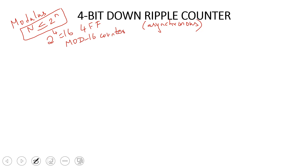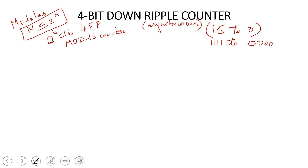For the down counter, we reverse count starting from number 15. This is a sequence of 16 states. The down counter counts in descending order — from 15 to 0. In binary, 15 is 1111 for 4 bits, and it will count down from there.